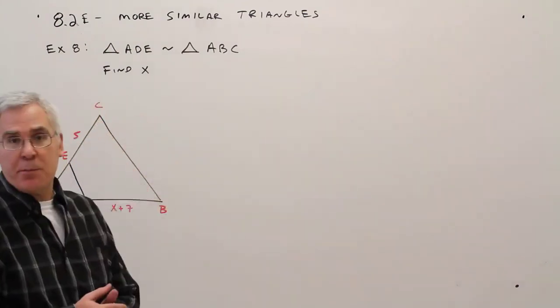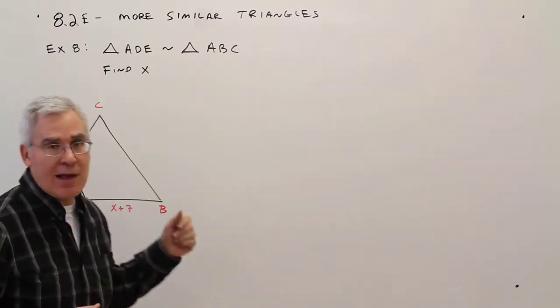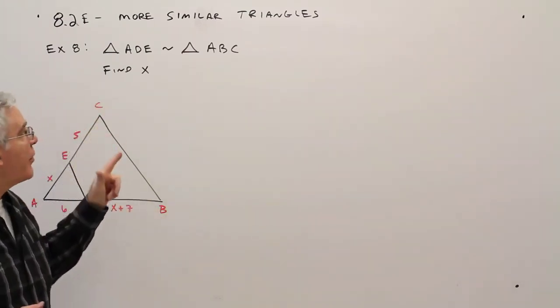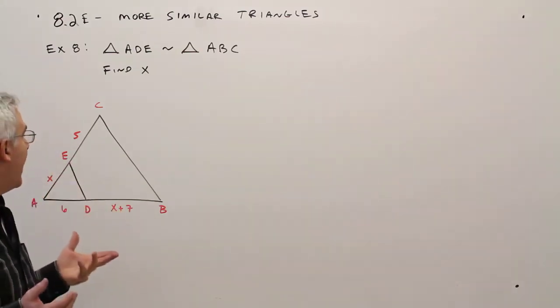Welcome to video 8.2e, more on similar triangles. So here's example 8. Triangle ADE is similar to triangle ABC with these dimensions. Find X.